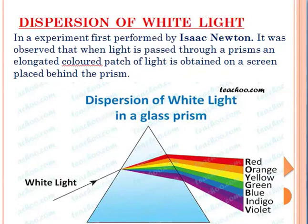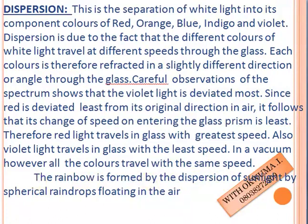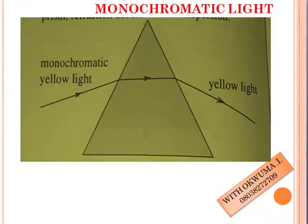When we consider a vacuum — empty space — all these colors of light travel with the same speed. The speed of light in vacuum is 3.0 times 10 to the power 8 meters per second. The rainbow is formed by the dispersion of sunlight by spherical raindrops floating in the air.